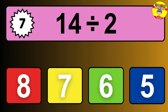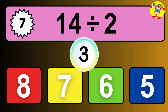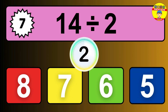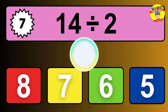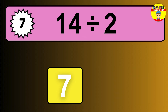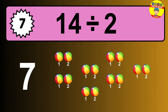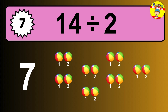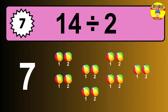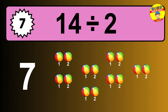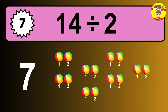14 divided by 2 is... time to think. Let's go to the solution. Divide the number 14 by 2. Each group contains 2 units. So dividing 14 by 2 results in 7 equal groups. Thus, the result is... 14 divided by 2 equals 7.